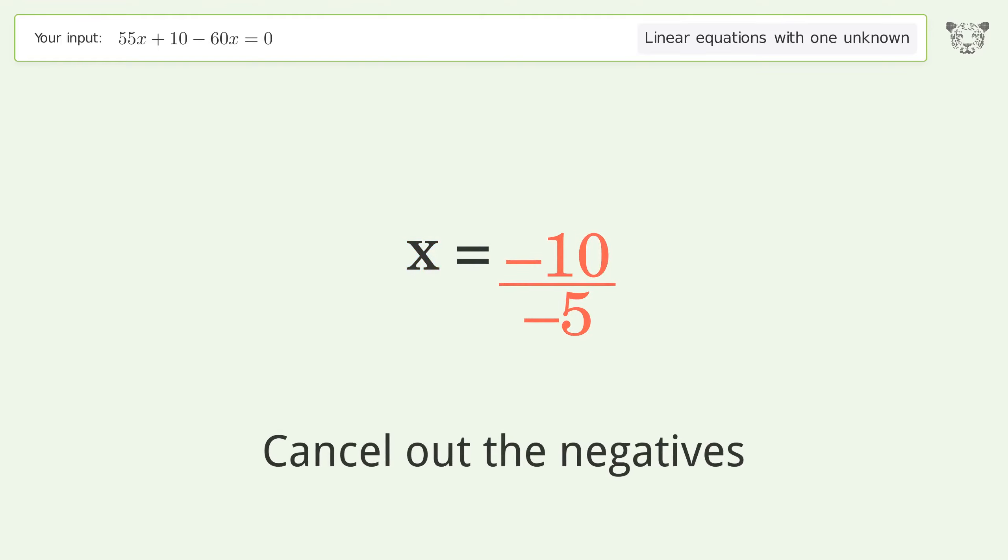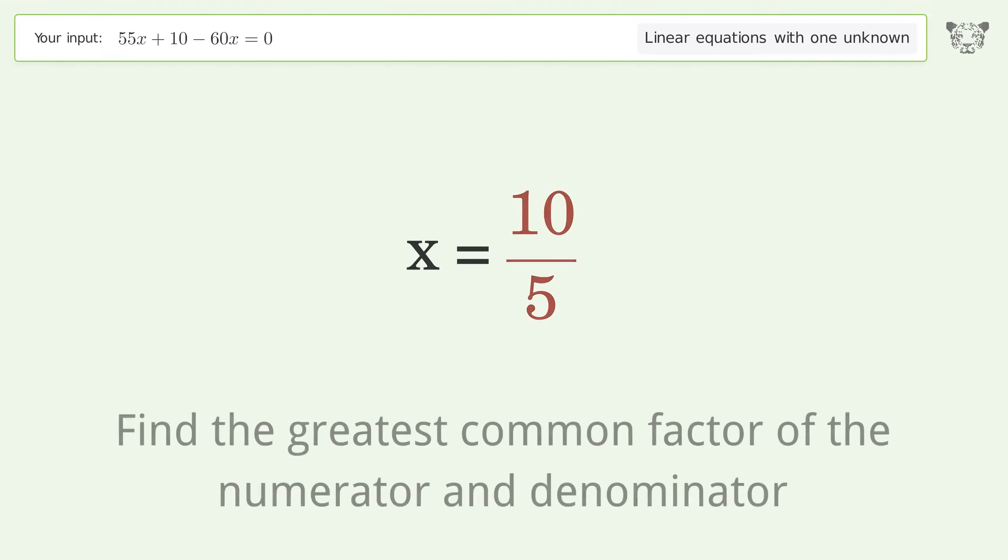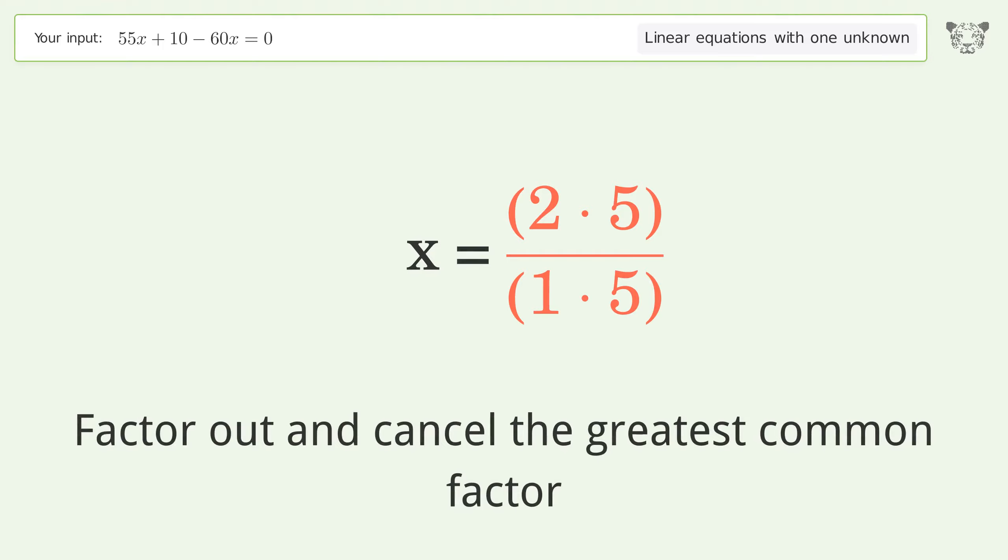Cancel out the negatives. Find the greatest common factor of the numerator and denominator. Factor out and cancel the greatest common factor.